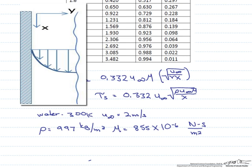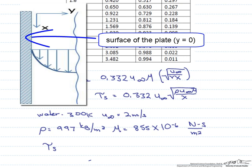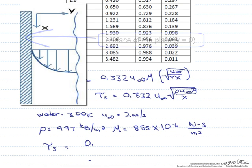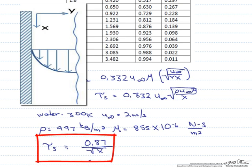So when we put that into our expression for tau sub s, where again s equals the surface, this is going to equal 0.87 divided by the square root of x. This is an expression for us to be able to find the shear stress at the wall with water flowing at 2 meters per second at 300 K anywhere along the length of the flat plate.